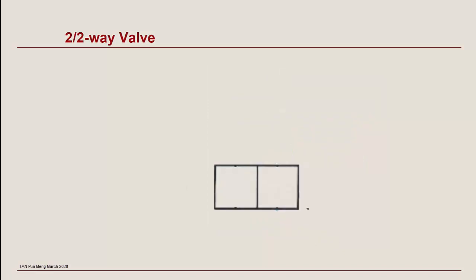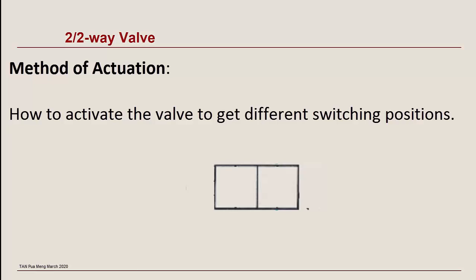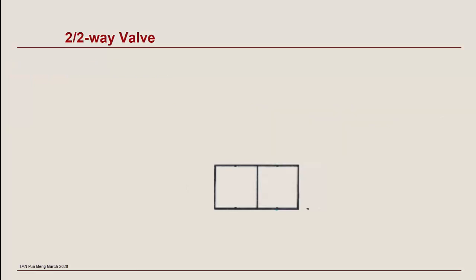To completely represent the whole pneumatic symbol of the valve, we have to consider method of actuation, that is, how to activate the valve to get different switching positions. To add the actuation symbols, they are drawn horizontally against the vertical edge of the squares.